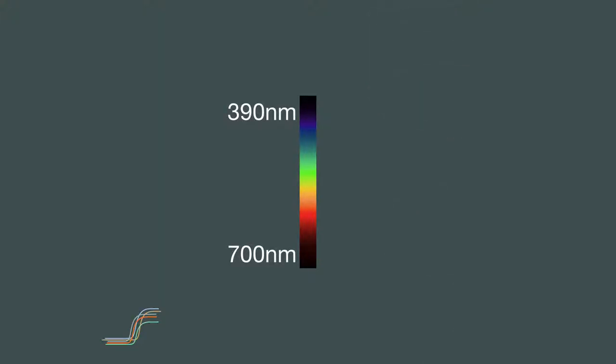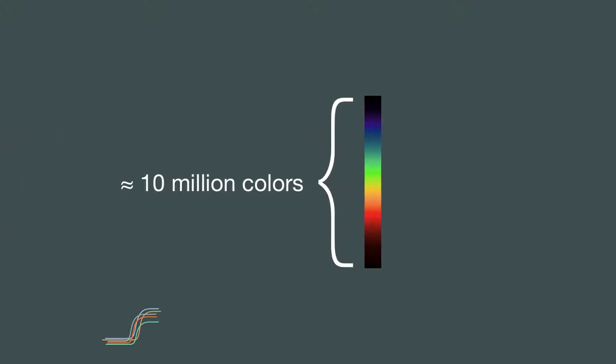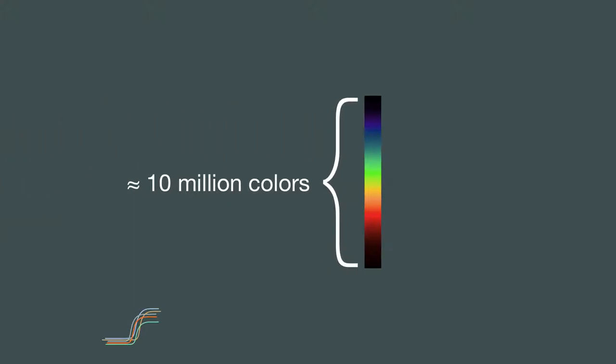In the electromagnetic spectrum, a narrow band of wavelengths are visible to the human eye, called the visible light spectrum. Light visible to the human eye ranges in wavelength from approximately 390 nanometers to 700 nanometers. The human eye interprets light in these wavelengths as approximately 10 million distinguishable colors.